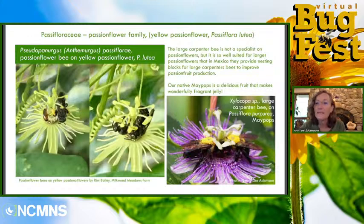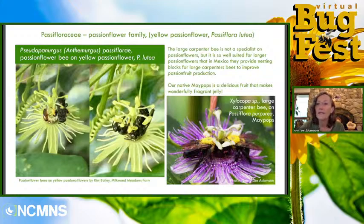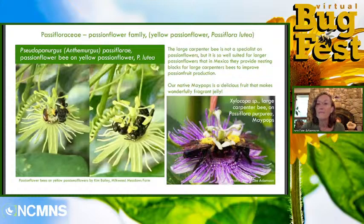Evening primroses are really fun to watch at dusk when they open. Some of our evening primroses, like sundrops, actually bloom during the day — but visiting at dusk you can watch flowers open, and there are some amazing large sphinx moths that visit them, as well as the specialist bee. This slide about passionflowers is a little deceptive because the yellow passionflowers are about a quarter the size of the purple ones. Even though we have two species of passionflowers, specialists are only known for the little yellow one. Carpenter bees fit the purple flowers perfectly, and in Mexico where they grow passionfruit, they actually provide carpenter bee nesting blocks. If you haven't ever eaten maypop fruit, I highly recommend it — it also makes a really delicious, fragrant jelly.